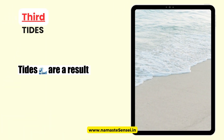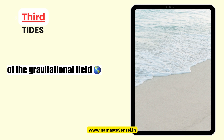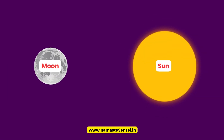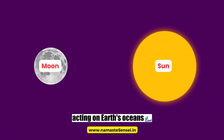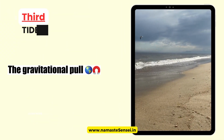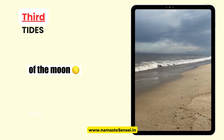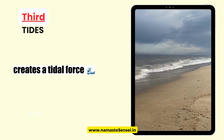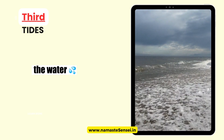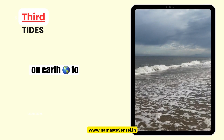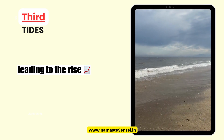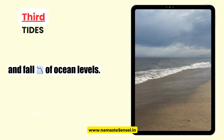Third, tides. Tides are a result of the gravitational field of the Moon and the Sun acting on Earth's oceans. The gravitational pull of the Moon and the Sun creates a tidal force that causes the water on Earth to bulge outward, leading to the rise and fall of ocean levels.